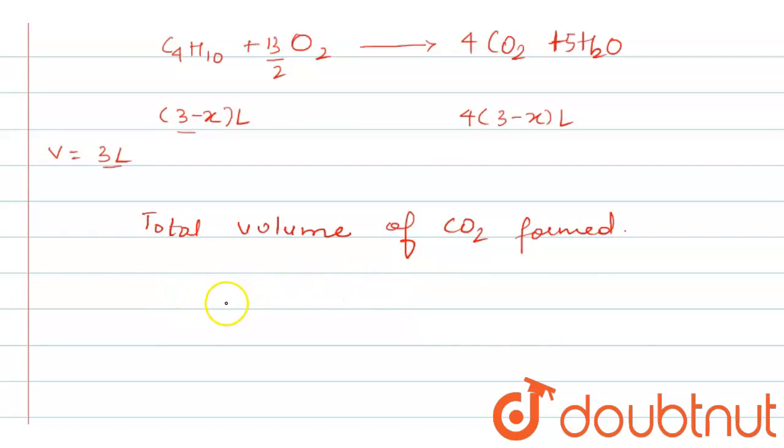When X liter of propane undergoes combustion, it produced 3X liters of carbon dioxide. And butane, it produced 4 into 3 minus X liters of carbon dioxide. So it was total 10 liters of CO2 was produced.